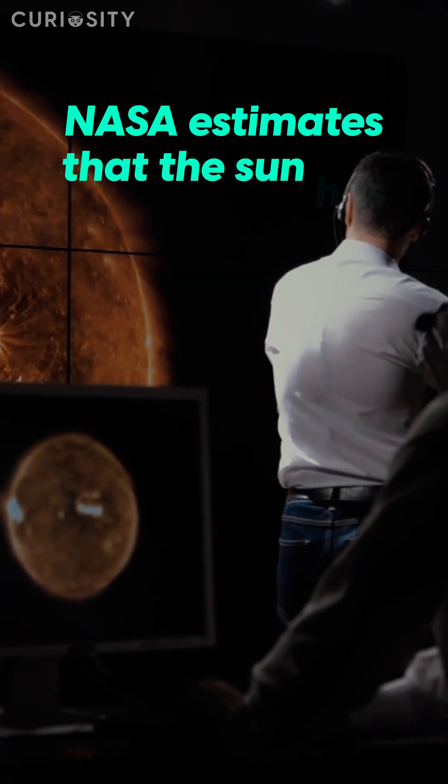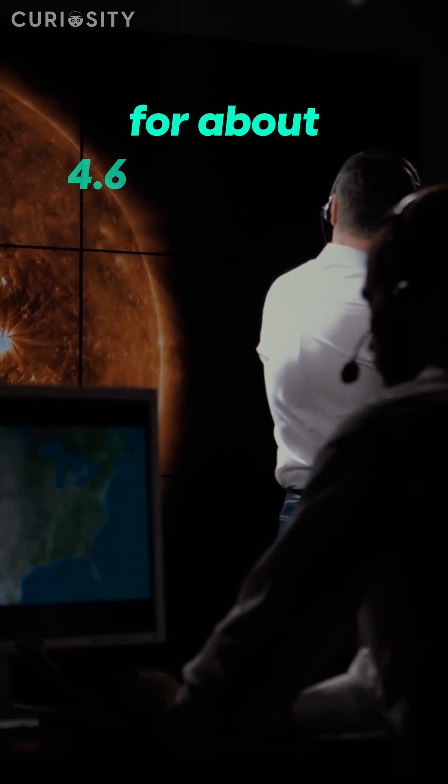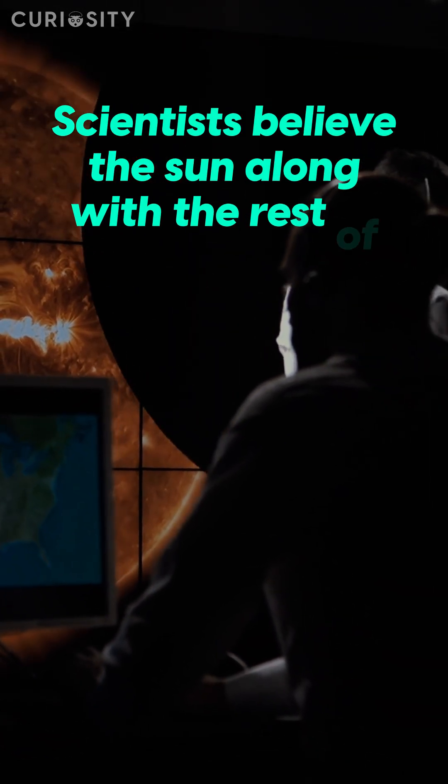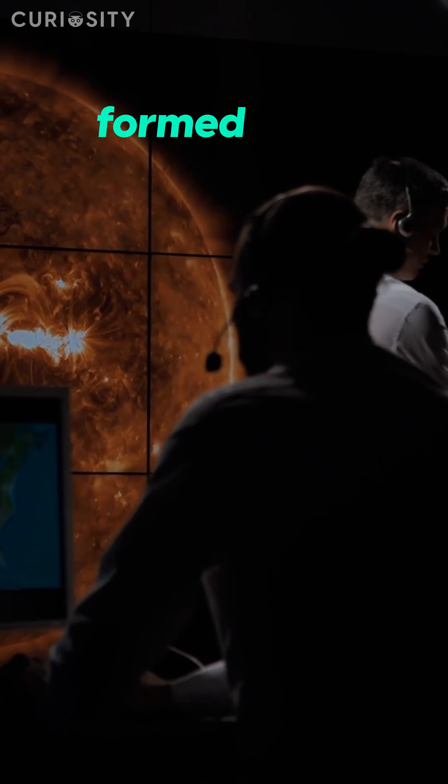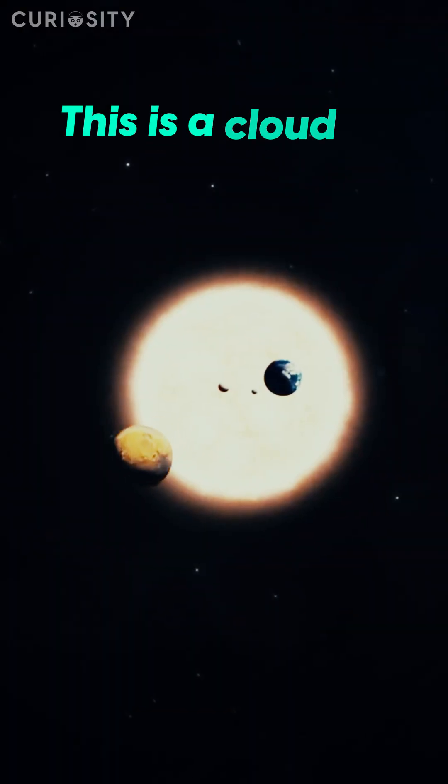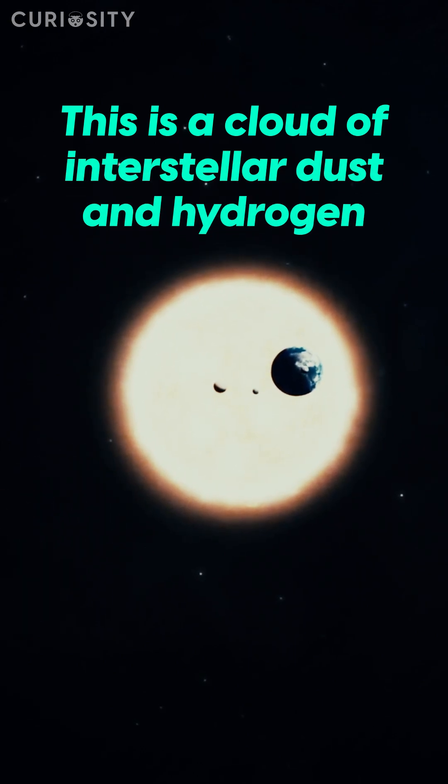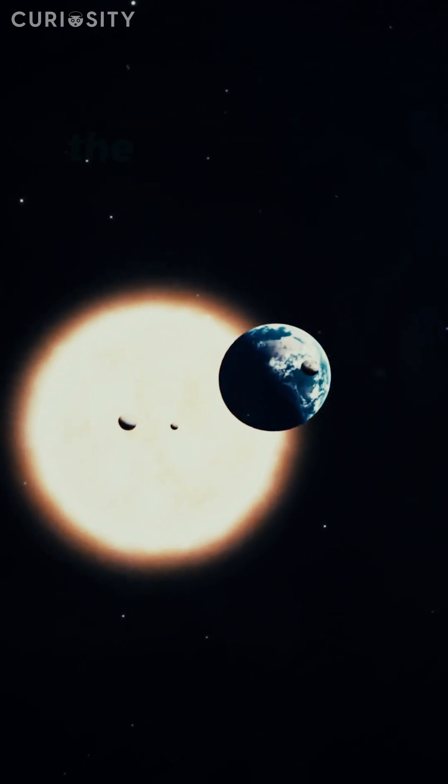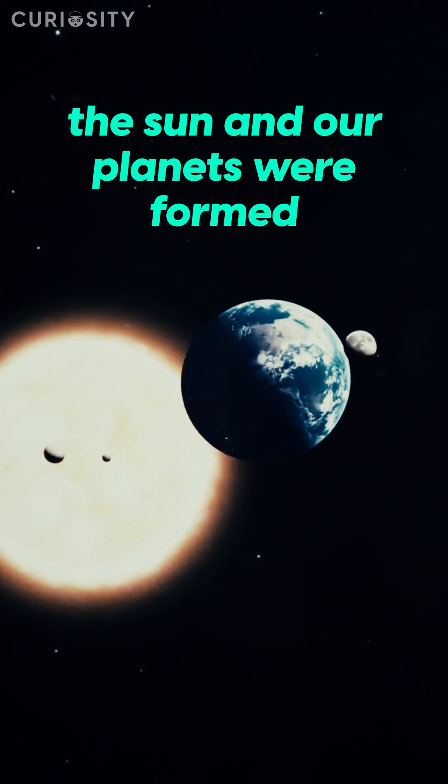NASA estimates that the Sun has been around for about 4.6 billion years. Scientists believe the Sun, along with the rest of our solar system, formed from something called the Solar Nebula. This is a cloud of interstellar dust and hydrogen that came together under its own gravity. From here, the Sun and our planets were formed.